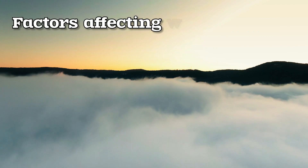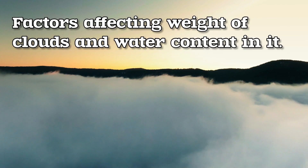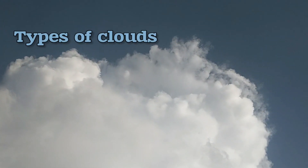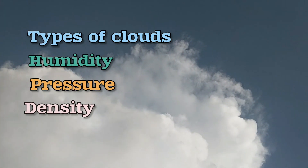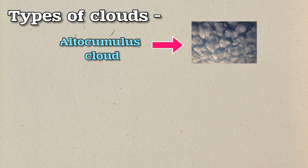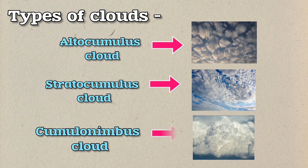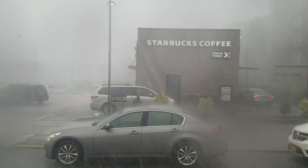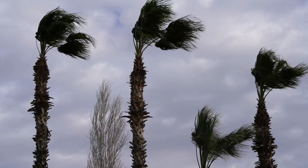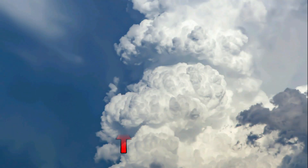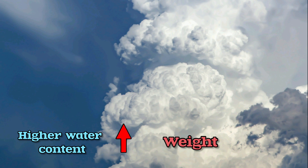Now let's see the factors affecting the weight of clouds and water content in them. The water content in clouds is influenced by various factors like type of cloud, humidity, pressure, density, and many more. There are many types of clouds, such as cumulus, cirrus, cirrocumulus, altocumulus, stratocumulus, cumulonimbus, and many more. The cumulonimbus cloud is responsible for heavy rain, thunderstorms, lightning, hailstorms, and fast wind speed. The average cumulonimbus cloud has a height of 11 kilometers and has higher water content, so the weight of this cloud will also be more.